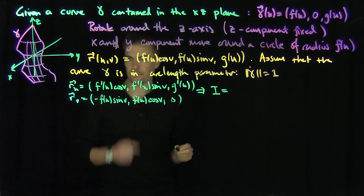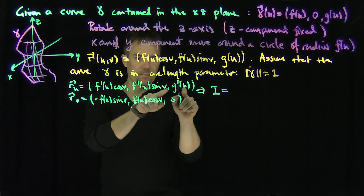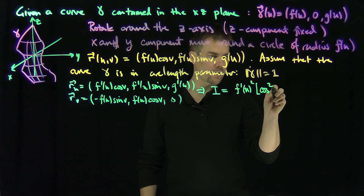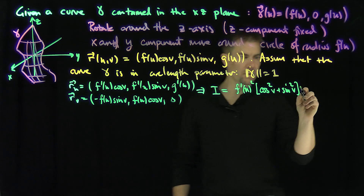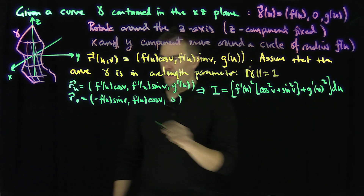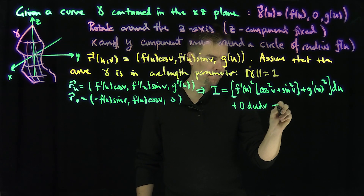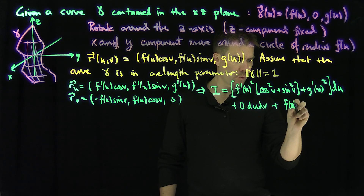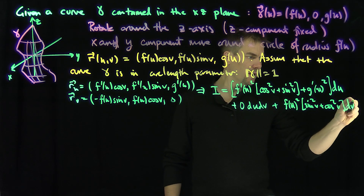Now let's compute the first fundamental form. r_u · r_u gives f'² cos²v + f'² sin²v + g'², which is f'(u)²(cos²v + sin²v) + g'²= f'² + g'² for the du² terms. r_u · r_v equals zero. r_v · r_v gives f²sin²v + f²cos²v = f(u)² for the dv² terms.